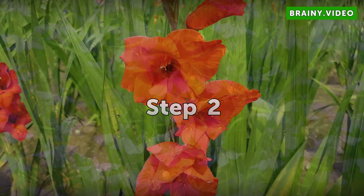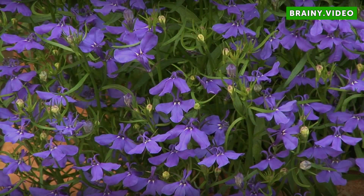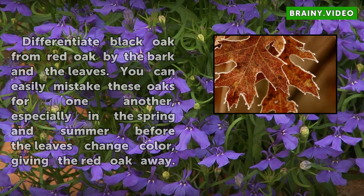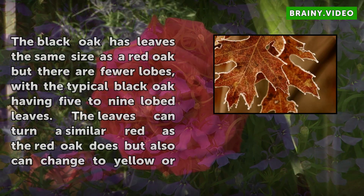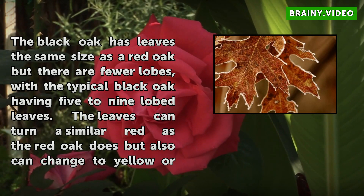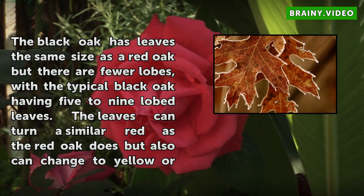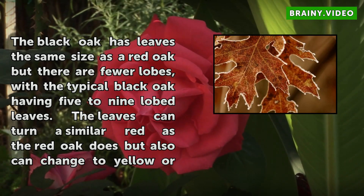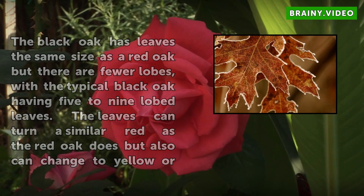Step 2. Differentiate black oak from red oak by the bark and the leaves. You can easily mistake these oaks for one another, especially in the spring and summer before the leaves change color, giving the red oak away. The black oak has leaves the same size as a red oak but there are fewer lobes, with a typical black oak having 5 to 9 lobed leaves. The leaves can turn a similar red as the red oak does, but also can change to yellow or brown in the autumn chill.